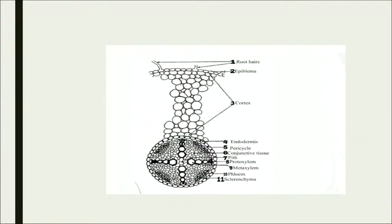Root hairs emerge from the epiblema — the outermost layer — and are generally single-celled, increasing the absorption area of the root. The cortex (label 3) has multiple layers of thin-walled cells with lots of intercellular space. Its main functions are storage of food and helping in conduction of water and minerals.